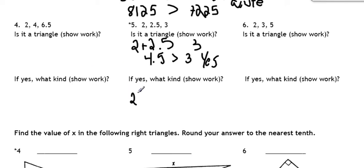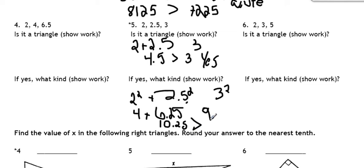Now we have to see what type it is. So 2 squared plus 2.5 squared compared to 3 squared. So it's 4 plus 6.25 compared to 9. This becomes 10.25, which is bigger than 9. So we have another acute triangle.